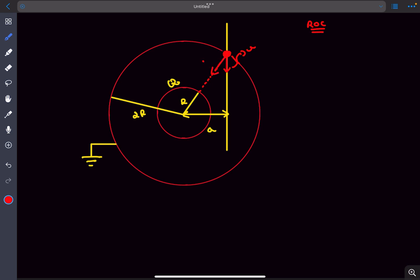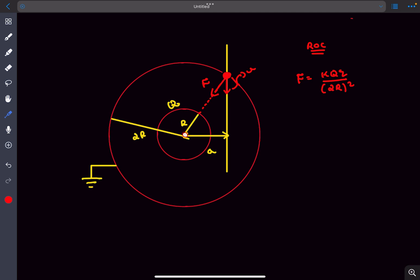Now in question 2 they want us to find the speed with which the particle will hit the inner sphere. So as we have to find the speed of the particle when it hits the inner sphere, we have to conserve energy. We can say ui plus ki equals uf plus kf.